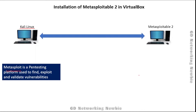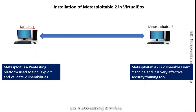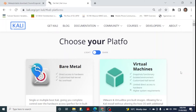For that we will be using a Metasploitable 2 machine. This Metasploitable 2 machine is a vulnerable Linux machine and it's a very effective security training tool. With this we can use certain tools to find out the weaknesses on this machine that is already vulnerable, and in this way we will be learning something about ethical hacking.